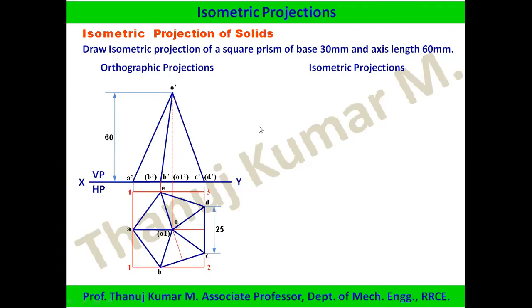We draw the orthographic projection first because certain dimensions of the object cannot be measured directly for isometric projection. By keeping the object in a box, the locations of points can be easily measured and transferred to the isometric view. Without the box, it is difficult to locate points like B in the isometric view.